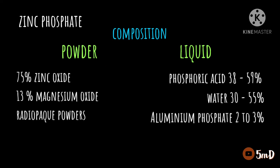The liquid consists of phosphoric acid as the main component, comprising 40 to 60%, with water as the second main component, along with aluminium phosphate at about 2 to 3%. In some cases, zinc phosphate is also added to the liquid. The liquid mainly controls the pH, and it is usually at an acidic pH.